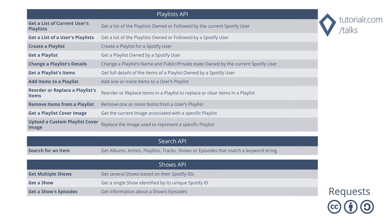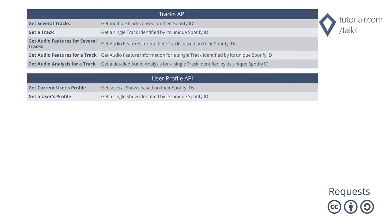Then, requests include Playlist API such as Get a Playlist's Items, Search API to search for an item, and Shows API such as Get a Show's Episodes. Finally, requests include Tracks API such as Get Audio Features for a Track, and User Profile API to Get Current Users' Profile.